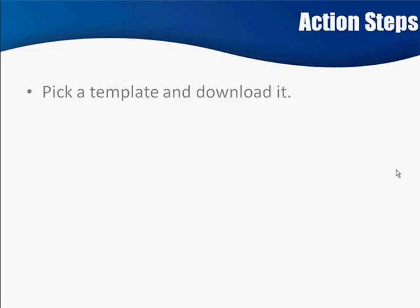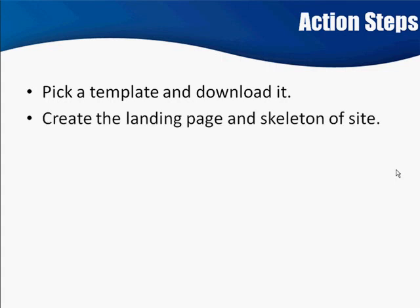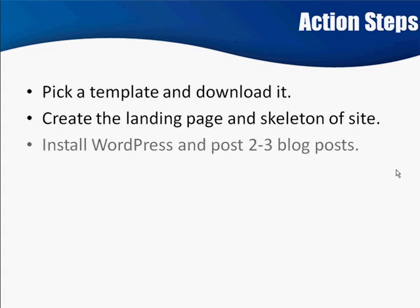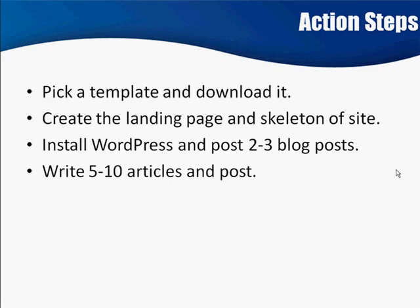Here are your action steps. You're going to go out right now, pick a template, download the template, create your landing page, and build the skeleton site. That means you've got all of the pages in place and they all link to each other with proper names like About Us or Contact. Then install WordPress and post two or three blogs. If you did not use a hosting provider that has the instant WordPress install, you'll have to do it manually — it's not very difficult, and there are plenty of tutorials on installing WordPress.